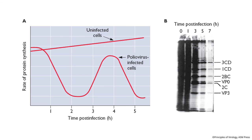Viruses need the entire translation apparatus devoted to making proteins from their messenger RNAs. For maximal efficiency, many viruses have evolved to turn off host translation. In poliovirus-infected cells, by two hours post-infection host cell translation is essentially shut off, and by three hours it's replaced by viral protein synthesis. In an uninfected cell the rate of synthesis remains steady over four to five hours. This illustrates the competition between virus and host for translational resources.